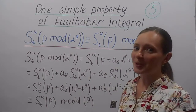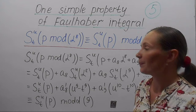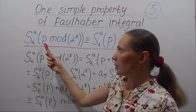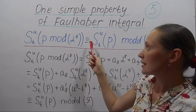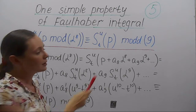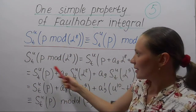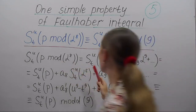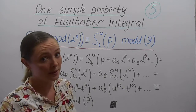Before we proceed, let me prove one simple property of the Faulhaber integral. If we find the integral from t to u of a poly number congruent to another mod α8, then this is congruent to the integral from t to u of that poly number mod d9. We write the poly number as the original poly number P plus some α terms with powers not less than 8.